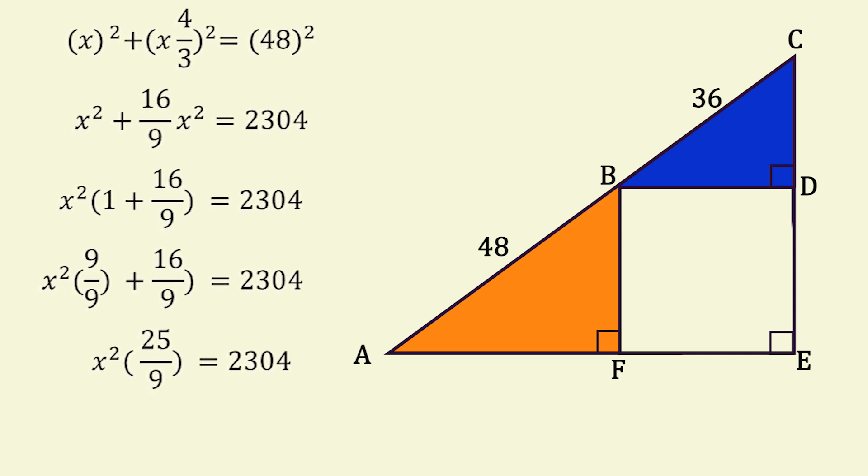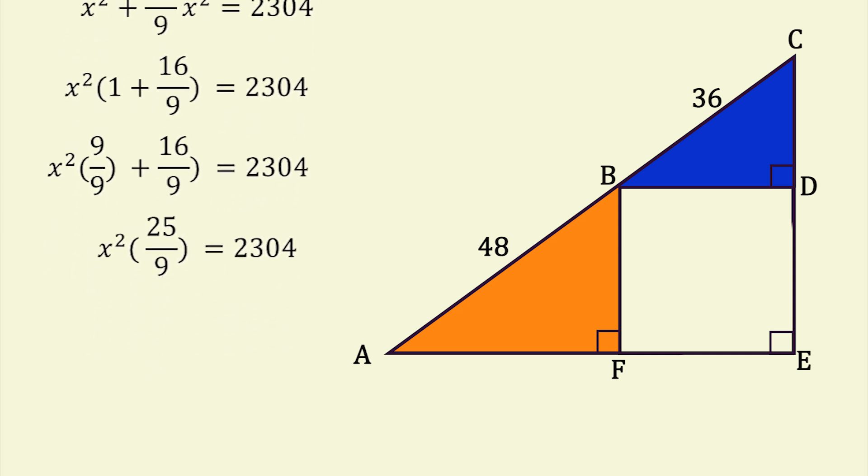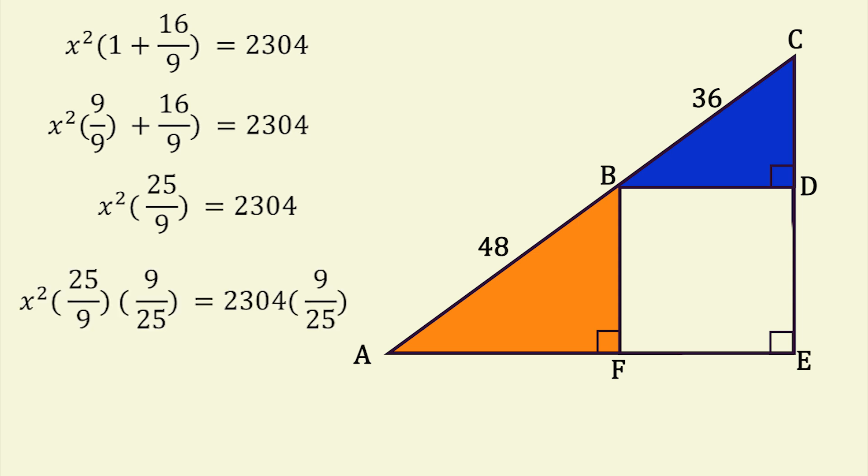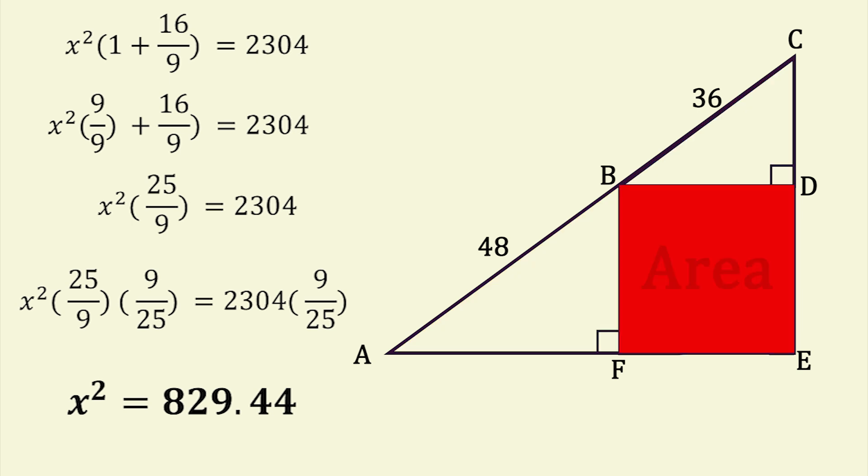Now, to isolate X squared, let's multiply both sides by 9 over 25. X squared equals 829.44. Since the question asks for the area of the square, and the area of a square is side squared, or X squared, we have found our answer. The area of the square is 829.44.